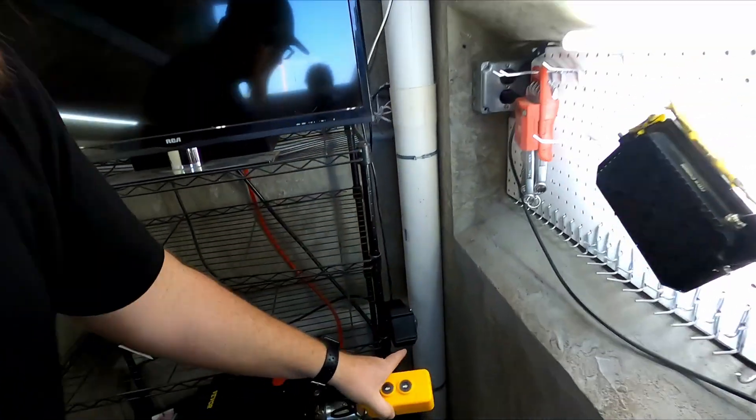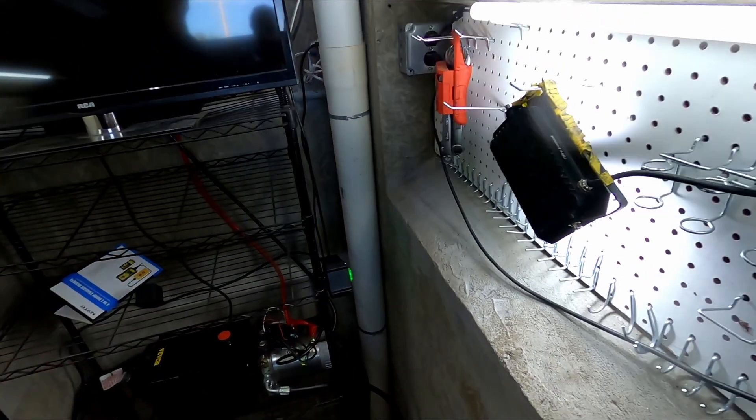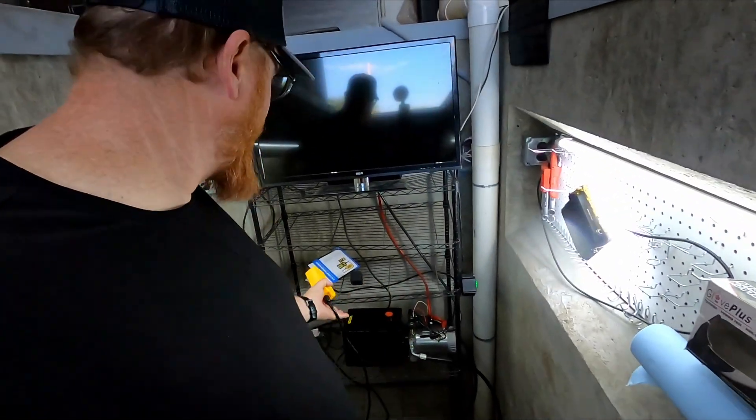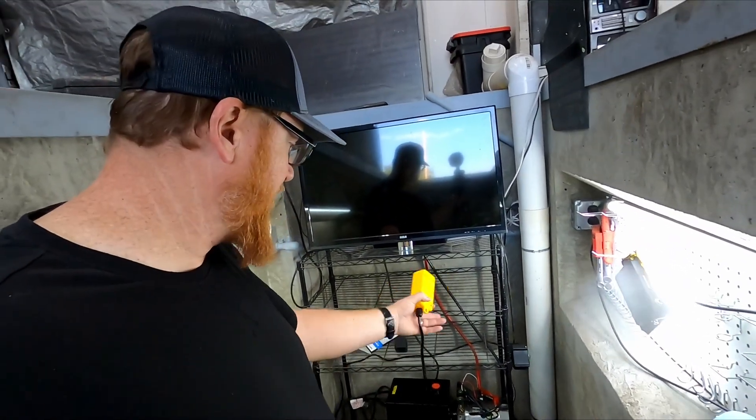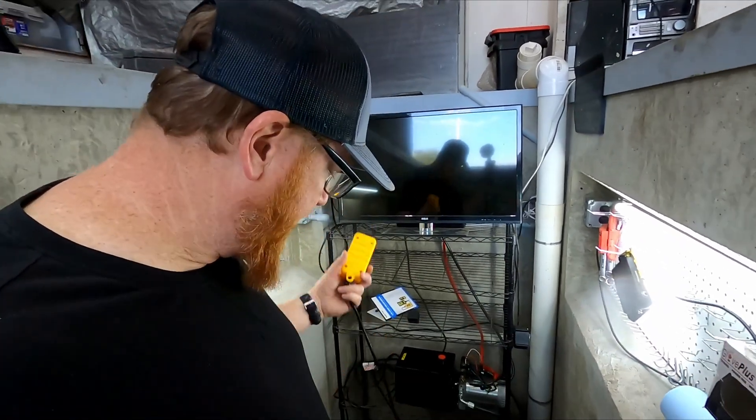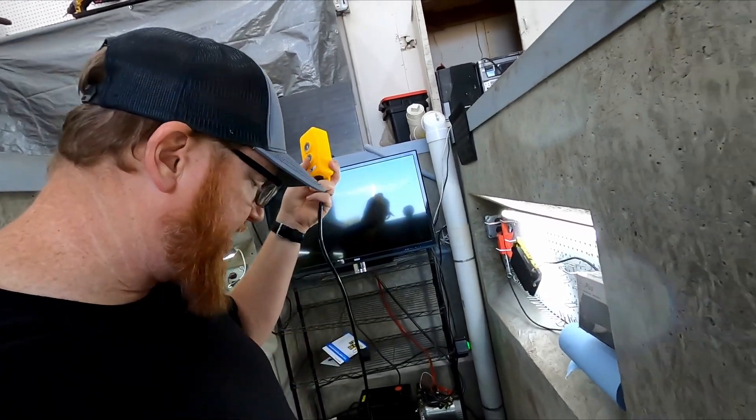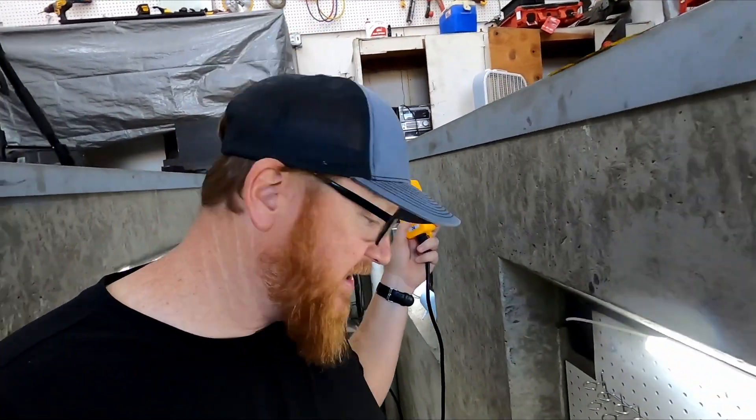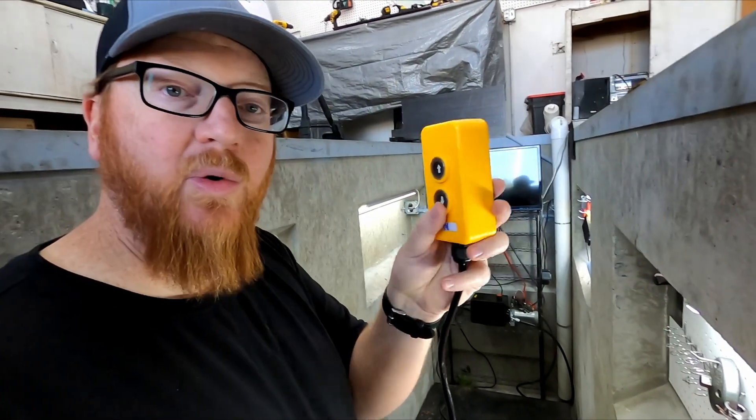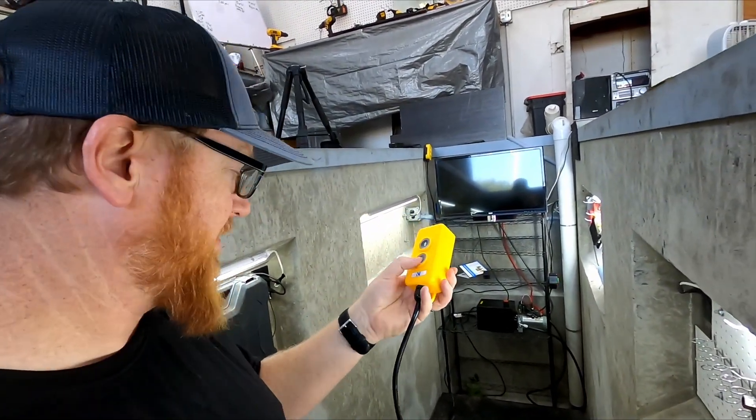So I went ahead and mounted my receiver over here out of the way. Maybe I can't see the light that well, but it's out of the way, it's not gonna get caught by the lift. Let's look at how long our manual cord is. I believe it's quite a bit longer than my old one. Yeah, plenty of cord on the manual switch.